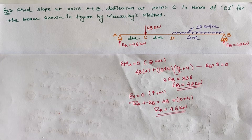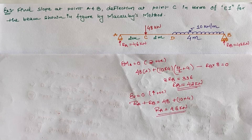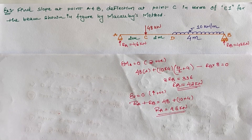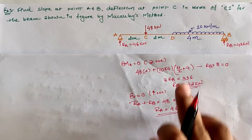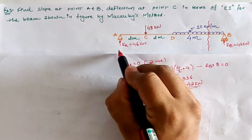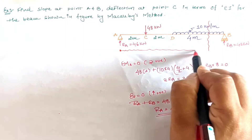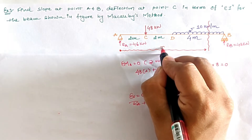With the support reactions calculated, the second step in Macaulay's method is to select a section. The section must be chosen in the last portion of the beam with the origin at the left-hand support, and the section must cut through the UDL. We assume the section lies between D and B, which also cuts the UDL, with the distance from the origin as x.